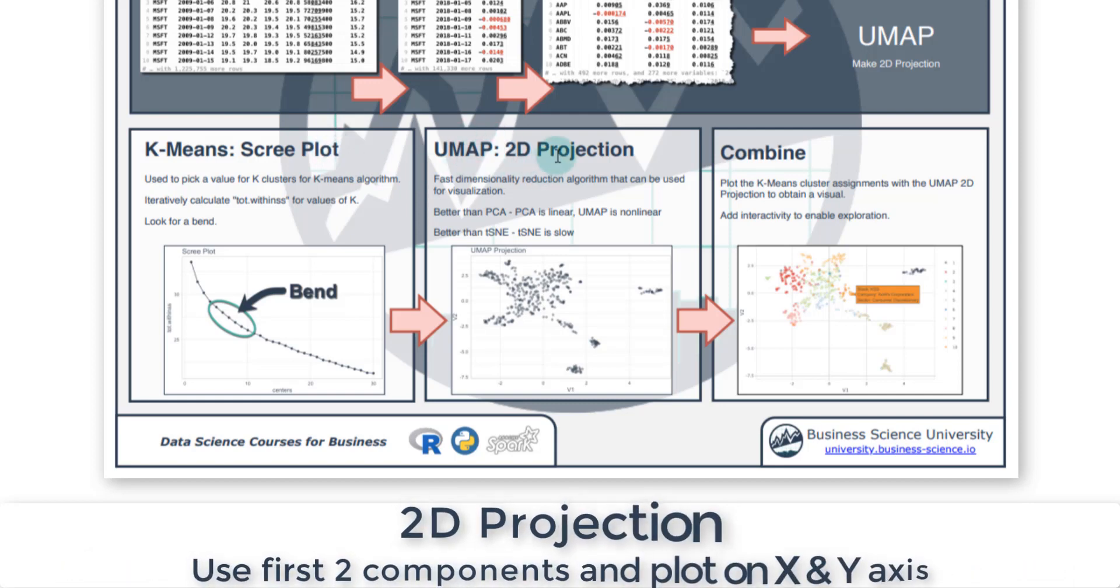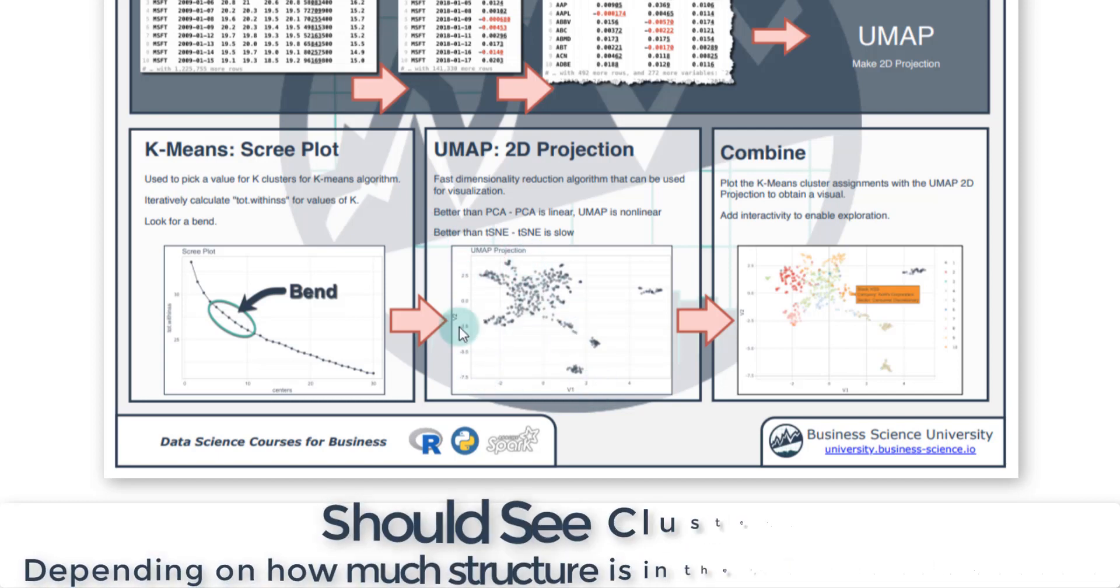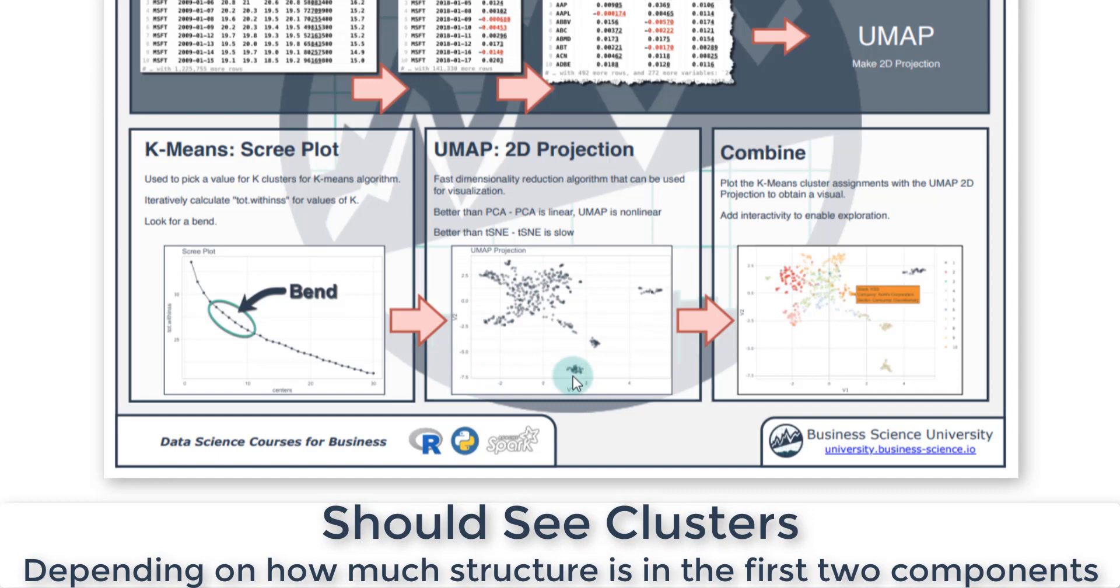Then we do UMAP to develop a 2D projection using the first two components, which will capture most of the variability in the dataset. It's basically taking your data and converting it into a two-dimensional structure, and then you'll see clusters in here pop out.